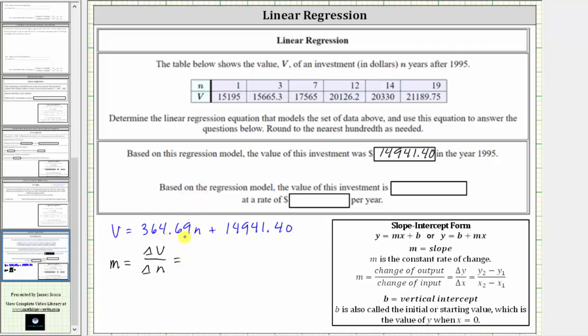it's helpful to write it as a fraction and include units. So this is 364.69 over one, but the change in V is in dollars.